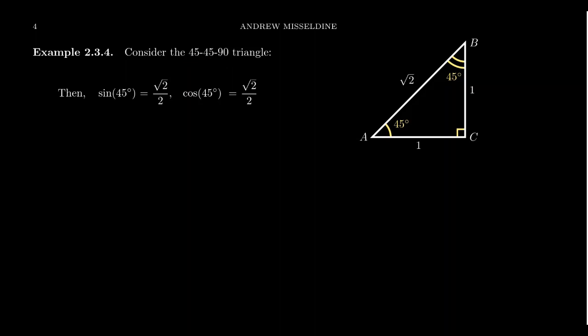An example of an isosceles right triangle can be found right here. We see that the angle measures are 45-45 degrees. Of course, it's a right angle as well. If the legs are side length 1 and 1, then the hypotenuse will be the square root of 2.